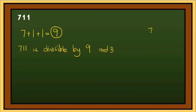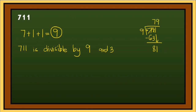Now let's prove that 711 is divisible by 9. 7 divided by 9 cannot be, so 71 divided by 9 is 7; 7 times 9 is 63; subtract: 71 minus 63 is 8. Bring down 1: 81 divided by 9 is 9; 9 times 9 is 81; subtract: 0. This proves that 711 is divisible by 9.